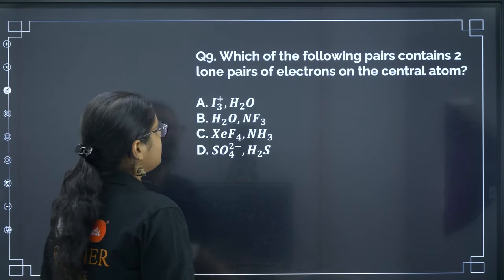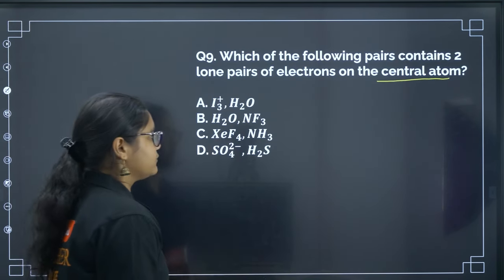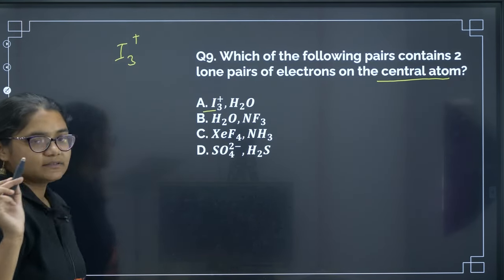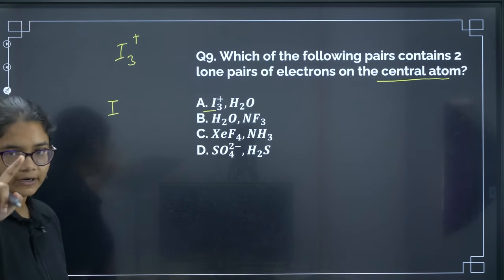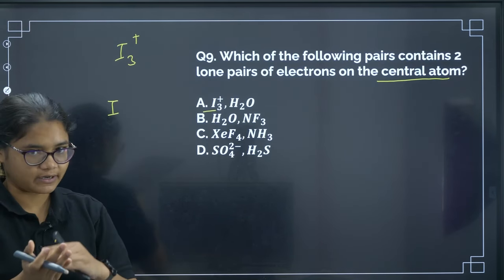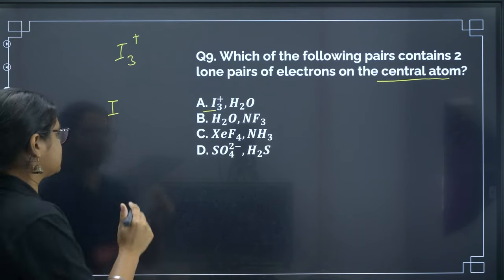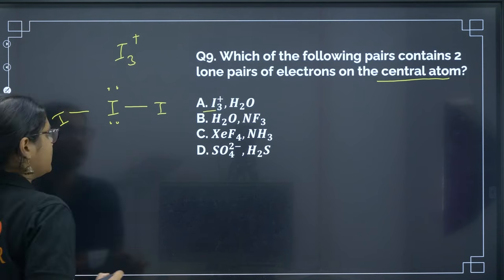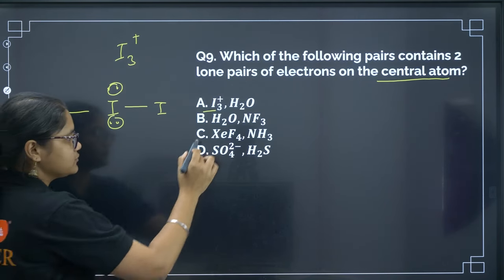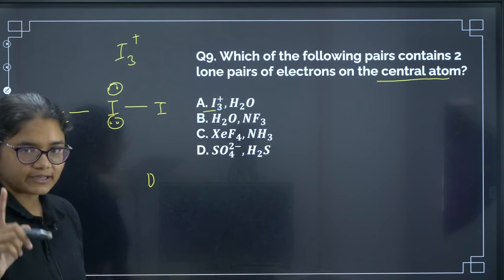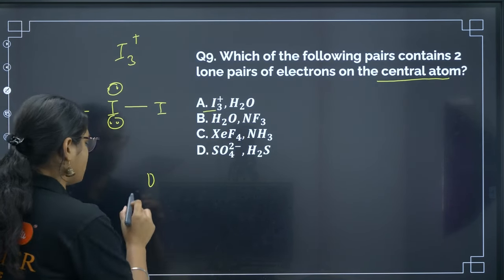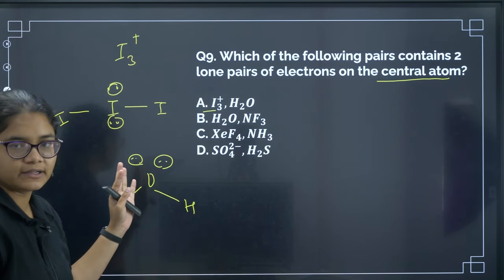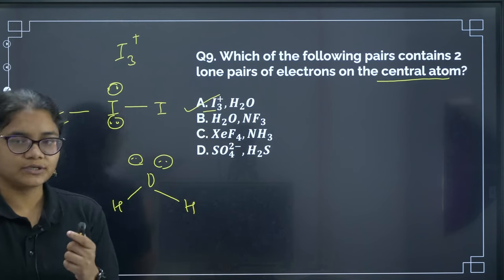Next: which of the following pairs contains 2 lone pairs on the central atom? For I3⁺: iodine normally has 7 valence electrons, but with a + charge it has 6. Two electrons form bonds with 2 other iodine atoms, leaving 2 lone pairs on the central atom. For H2O: oxygen has 6 valence electrons, 2 used for bonding, leaving 2 lone pairs. So both I3⁺ and H2O have 2 lone pairs on the central atom. Correct answer is option A.